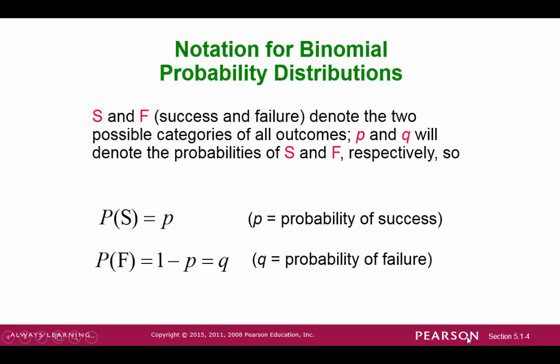Some basic notation. We will refer to the two categories as success and failure. We use S for success and F for failure. For each of these events, there is an assigned probability. The probability of success will be p. Note that the failure is a complement of success, so the probability of failure is 1 minus p. We will use q for this value.